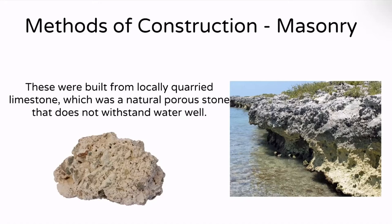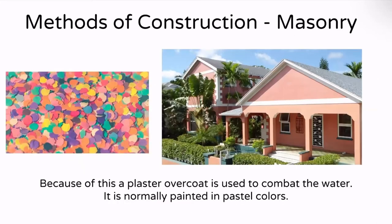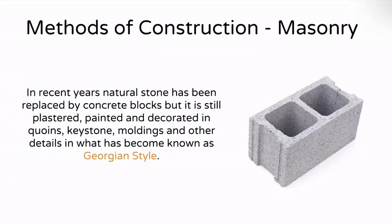However, limestone is porous, meaning it has holes in it and water can seep right through it — which is also how we get our water, as it lands at the bottom of the island. Because it's a porous rock, it's not able to keep water out. So people used plaster as an overcoat on top of the limestone to repel the water and make sure it doesn't seep into the building. Once the plaster is applied, it's usually painted in pastel colors.